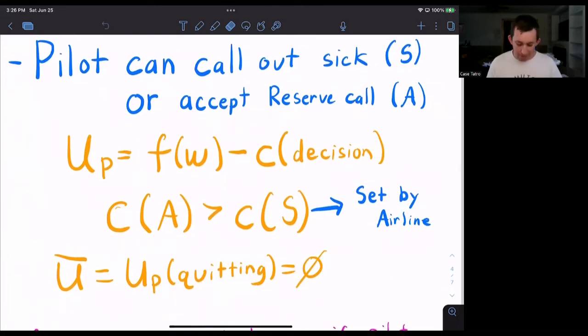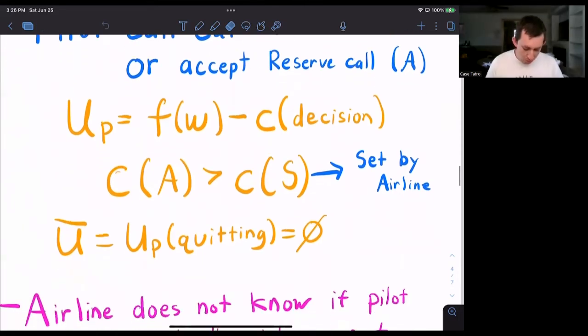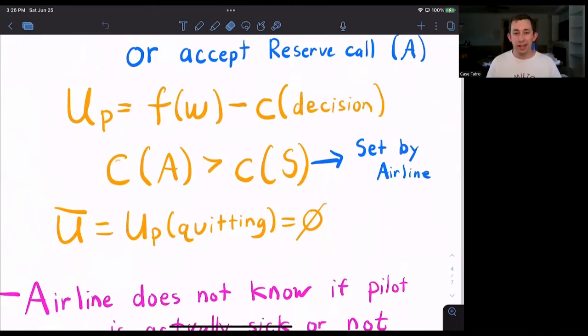We're going to say that the cost of accepting is higher than the cost of calling out sick. If you accept, you have to go to the airport, get ready, and actually work. If you call out sick, you get to sit on your couch. Now the U bar, or the reservation utility, or the outside option, is just the utility of quitting, and we're going to set that to be zero.